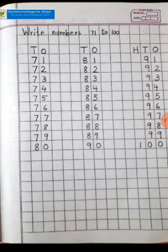Now you have to leave three boxes and write HTO. H stands for hundreds, T stands for tens, O stands for ones. So why have we written H over here? Now let's see.